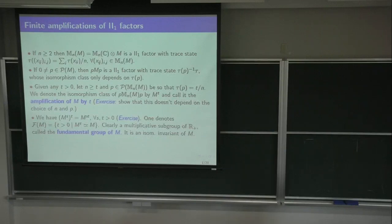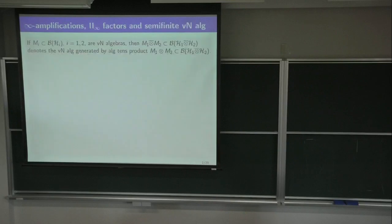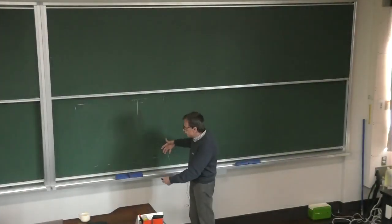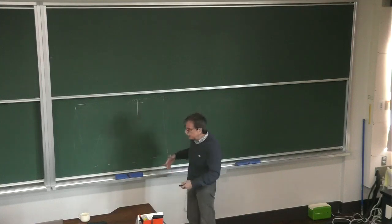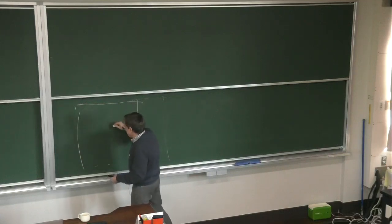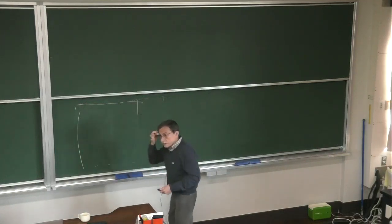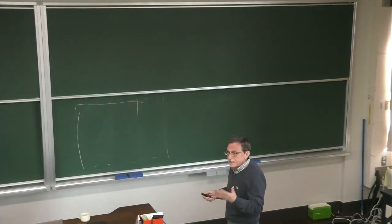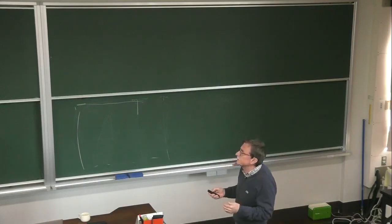As n grows, you have these inclusions of algebras one into the other, and you feel like drawing these half-lines and having — why not an infinite amplification of a II₁ factor? So what's that kind of algebra? Let's talk just a little bit about that.